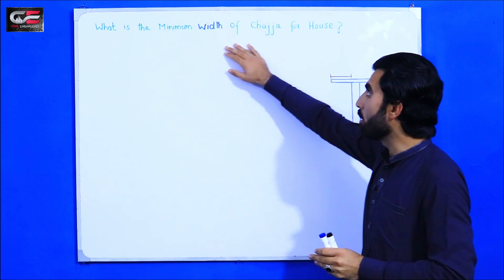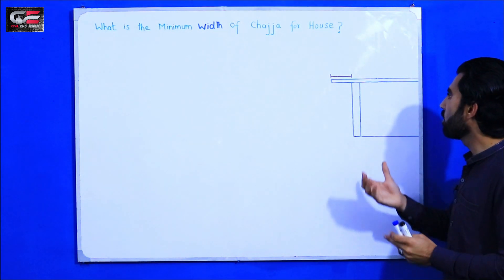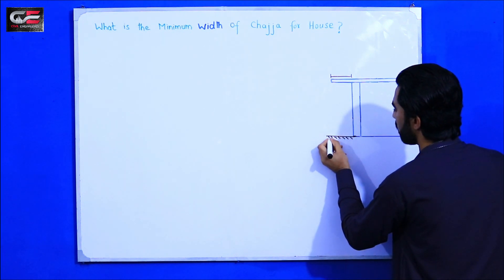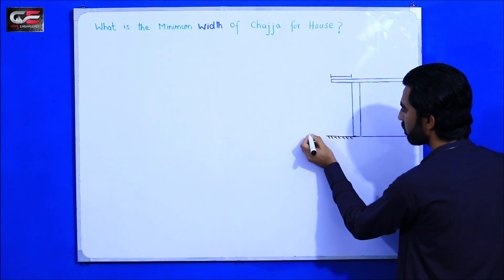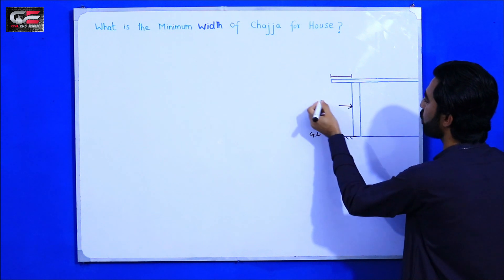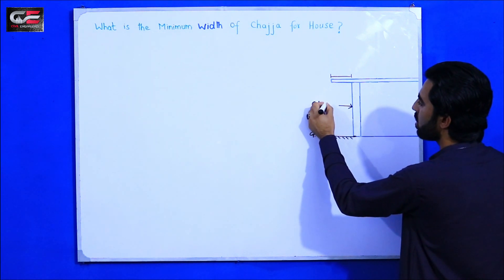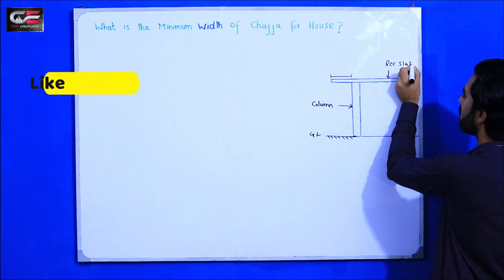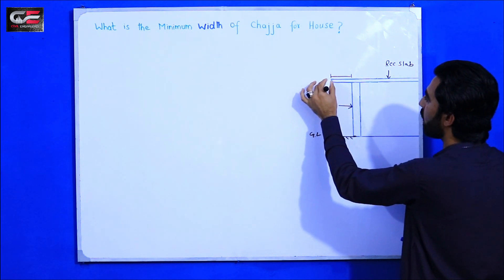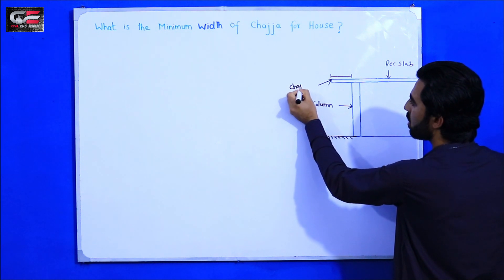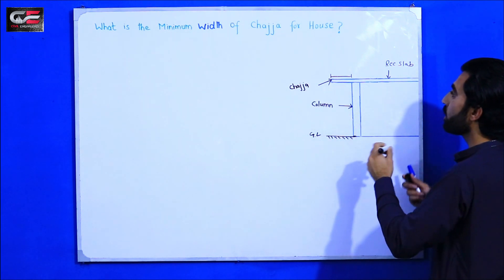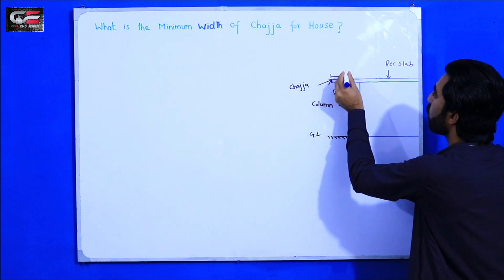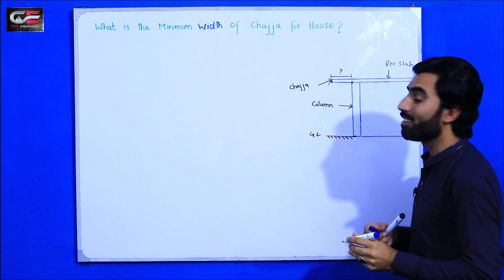As you can see, the topic is what is the minimum width of chadja for a house. This is the cross-section of a simple house. You can see this is the ground level, this is the support which is a column, this is the RCC slab, and here is the chadja. So what should be the minimum width of chadja — from here to here — that is the main point.